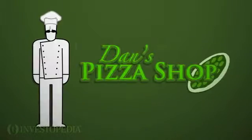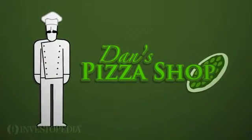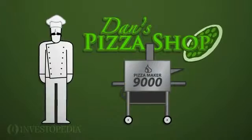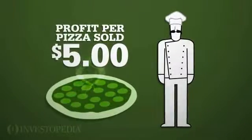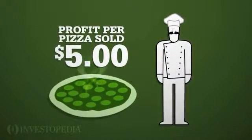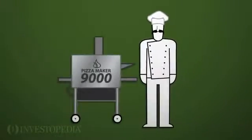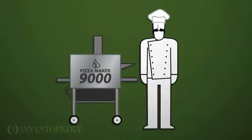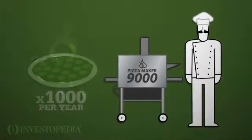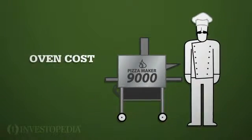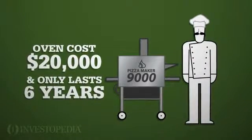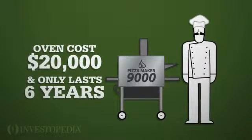Dan, the owner of Dan's Pizza Shop, is considering purchasing a new pizza oven. Dan's profit per pizza is $5. The oven will allow him to make and deliver 1,000 more pizzas per year. However, the oven costs $20,000 and will only last for six years.